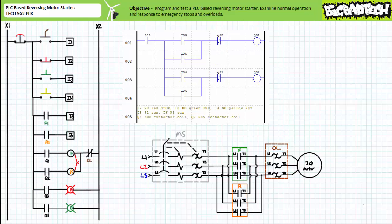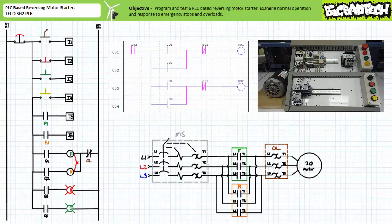Note that neither the e-stop, the overload, nor the mechanically interlocked contactors make an appearance in this program; however, these devices are readily apparent in the hard-wired schematic. Wired in this fashion, the e-stop and overload serve to override the PLC program in the event of an emergency stop or overload event, and the mechanically interlocked contactors prevent simultaneous closure of the forward and reversing contactors. When the program is downloaded to the target device and placed into operation, we can observe its behavior and simultaneously monitor the program using a live communications link — though there is a noticeable lag in the monitoring utility.